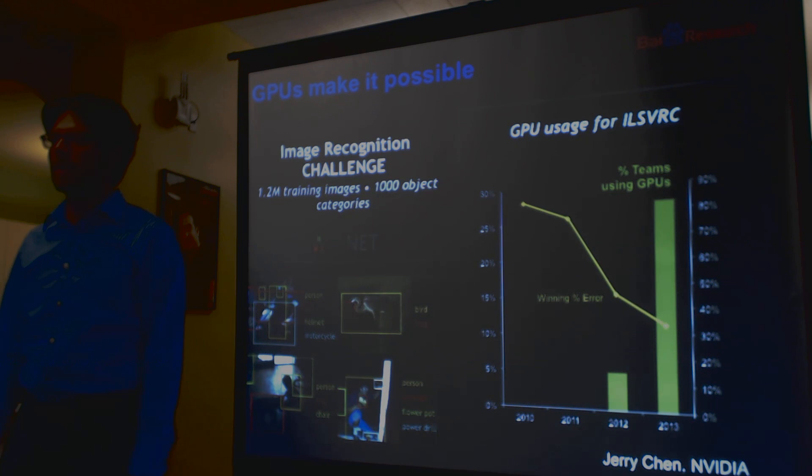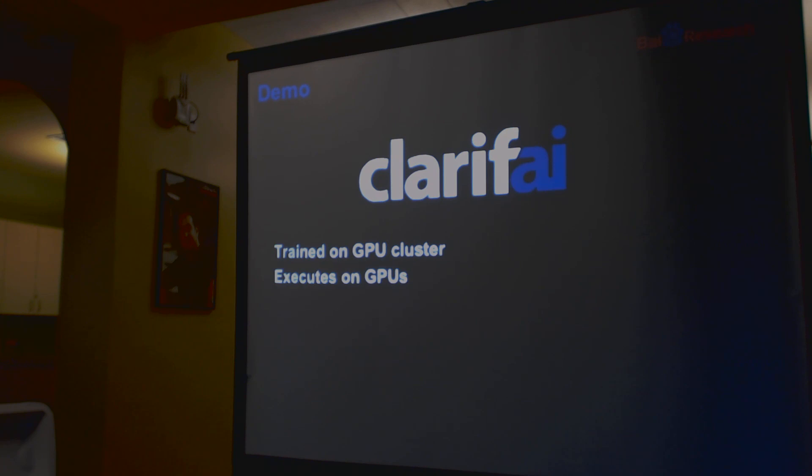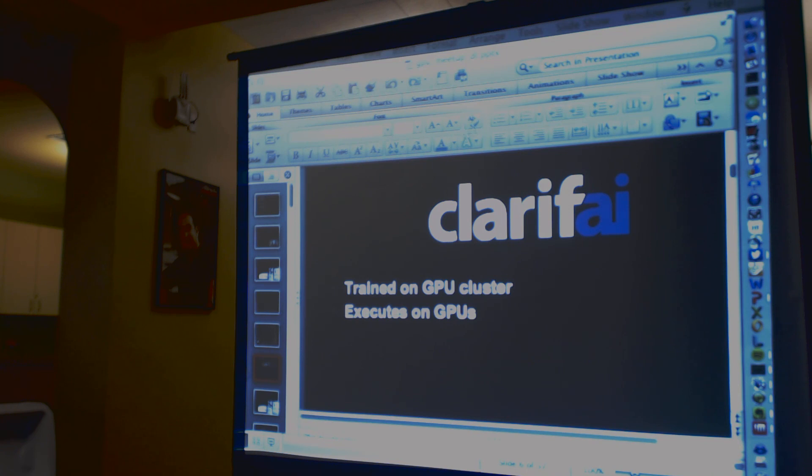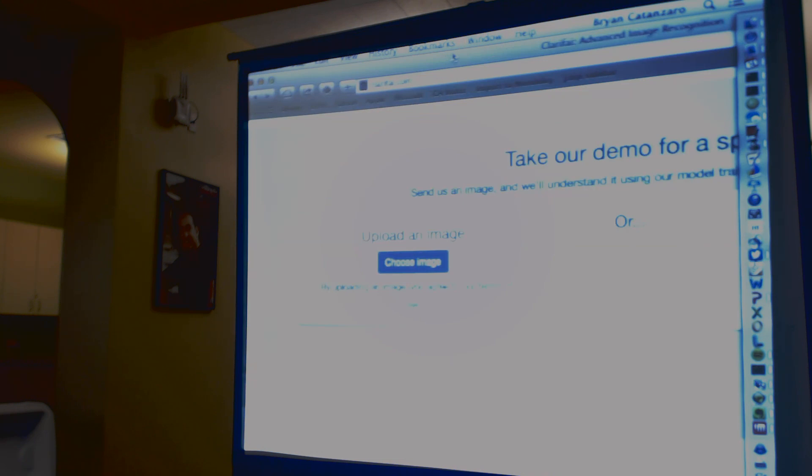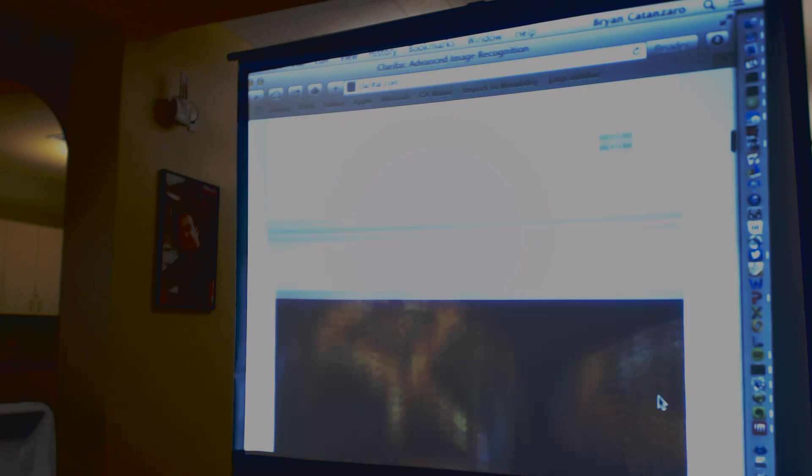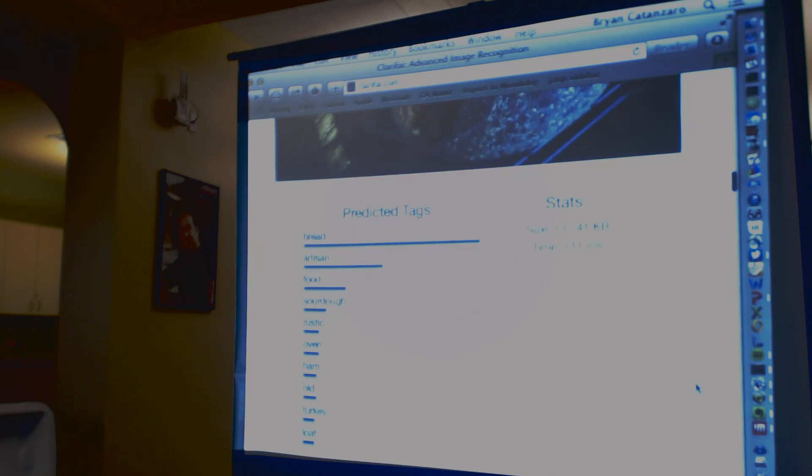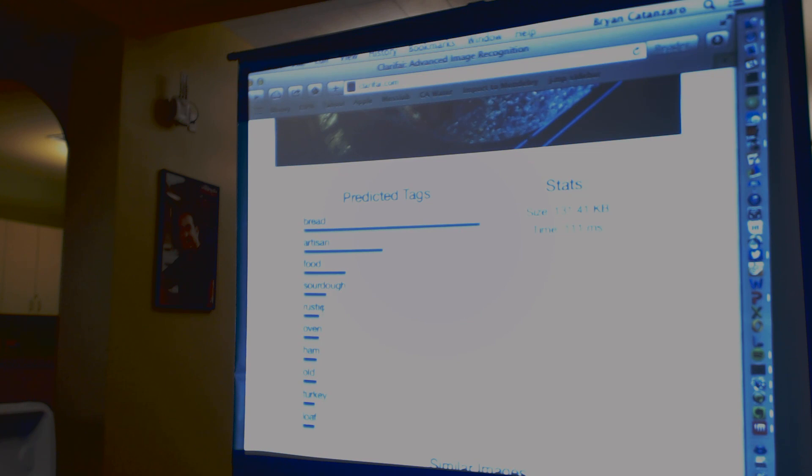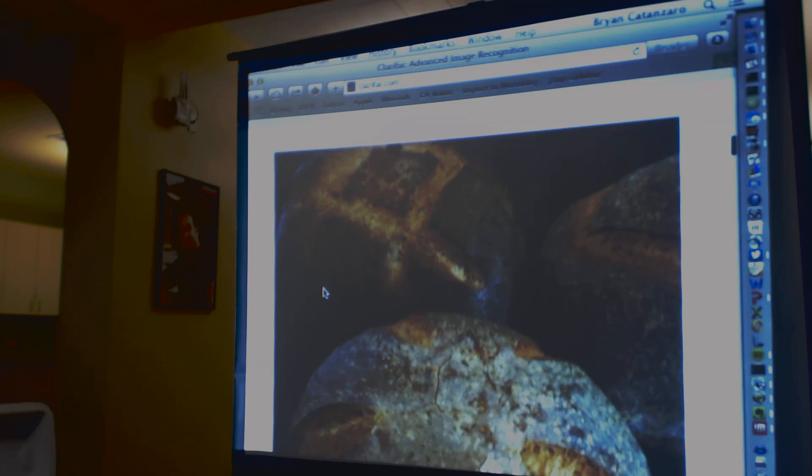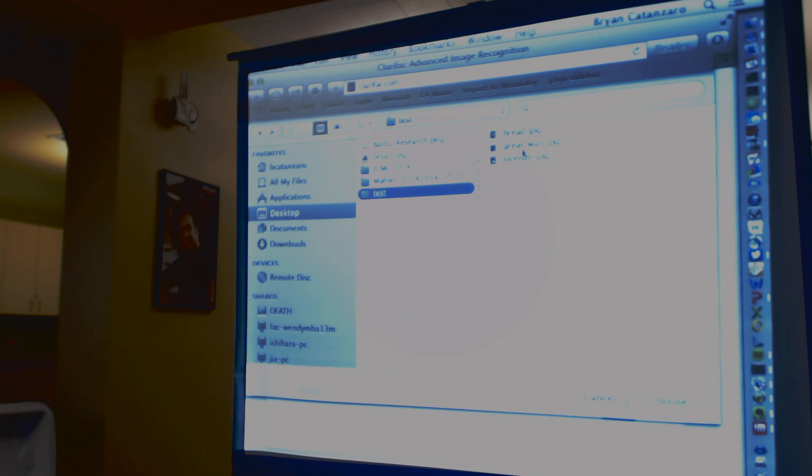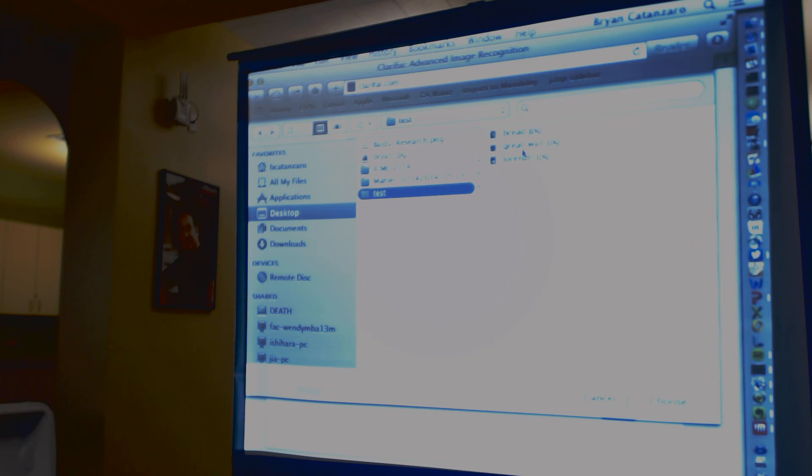I want to actually run a demo here from Clarify. Have you guys heard of this company Clarify before? I thought we'd have some fun. I baked some bread this week. I love to bake bread. And I take pictures and put them on Facebook all the time. So here's my bread. Clarify thinks that this is artisan bread, food, sourdough, rustic, oven. All of these tags that it predicted for this image are actually pretty amazing, right? This is just a picture that I uploaded to Facebook.